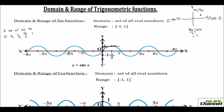In the first quadrant, all trigonometric ratios are positive — 'All Silver Tea Cups.' You can see the sine graph is on the positive side of the y-axis. In the second quadrant, sine is also positive, so the graph stays above zero. At 180° it returns to 0.